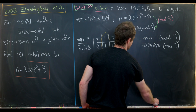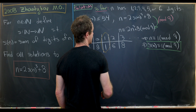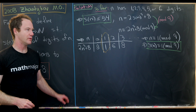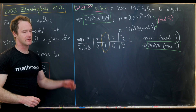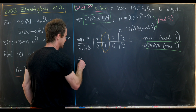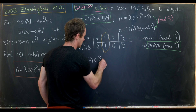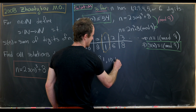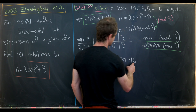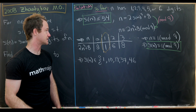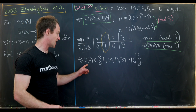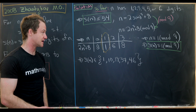We now have s(n) ≡ 1 (mod 9) and s(n) ≤ 54. Listing all numbers that are 1 mod 9 between 1 and 54: s(n) ∈ {1, 10, 19, 37, 46}. We check each of these candidate values.